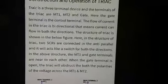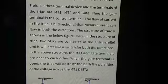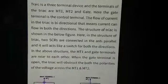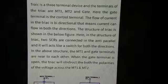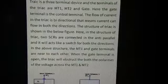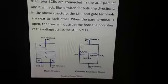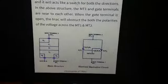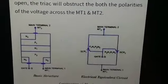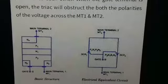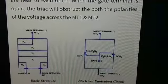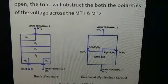two SCRs are connected in anti-parallel and it will act as a switch for both directions. In the above structure, the MT1 and gate terminals are near to each other. When the gate terminal is open, the TRIAC will block both polarities of the voltage across MT1 and MT2, as shown in the figure.